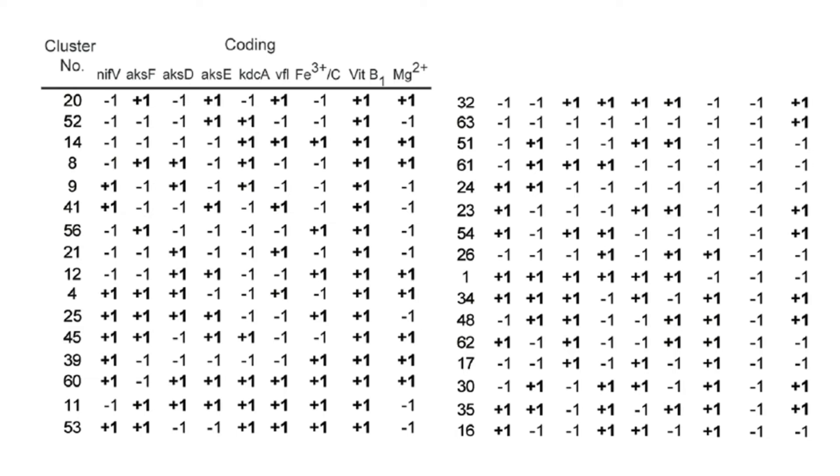A fractional factorial design with 32 runs was chosen in the screening experiment. There are two different levels for each factor. Plus 1 indicates a high value or strong promoter, while minus 1 indicates a low value or weak promoter.